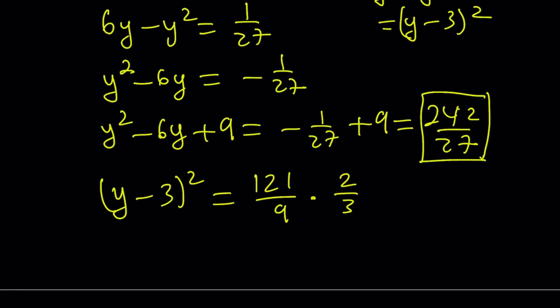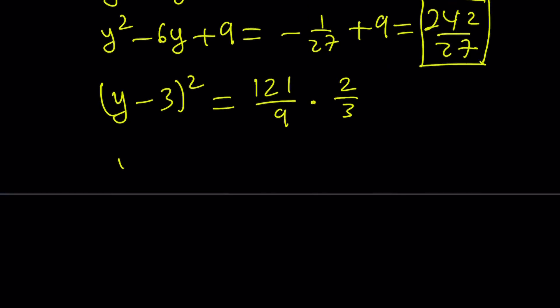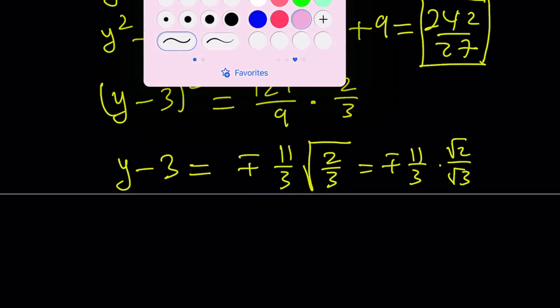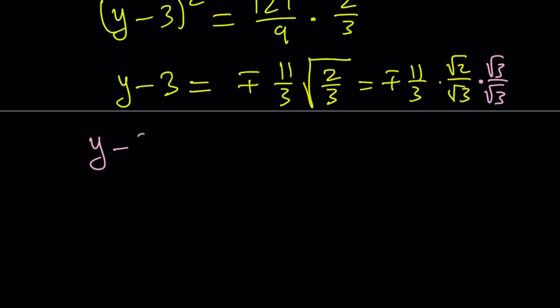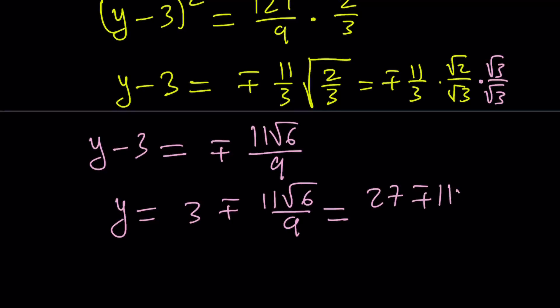So 121 over 9 is 11 third squared, which is nice because now I can square root both sides. And I get plus minus 11 over 3, and then multiply by the square root of 2 thirds. But the square root of 2 thirds can be written as root 2 over root 3. And obviously, I do want to rationalize the denominators and write it nicely. From here, we get the following. Y minus 3 becomes plus minus 11 root 6 over 9. And then I'm going to add 3 to both sides. That's going to look like 3 plus minus 11 root 6 over 9. And that can be written as 27 plus minus 11 root 6 divided by 9.